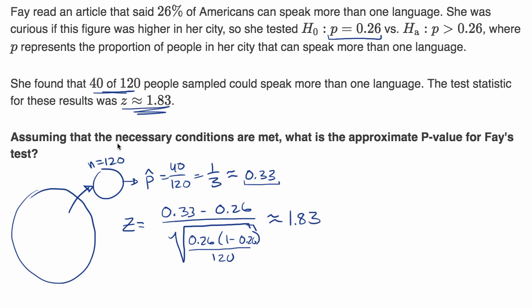And they say, assuming that the necessary conditions are met, they're talking about the necessary conditions to assume that the sampling distribution of the sample proportions is roughly normal. And that's the random condition, the normal condition, the independence condition that we have talked about in the past.